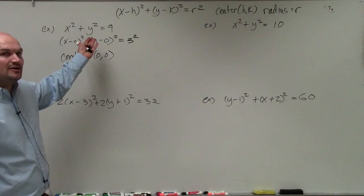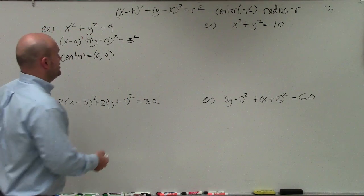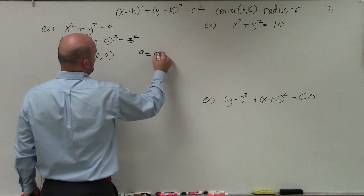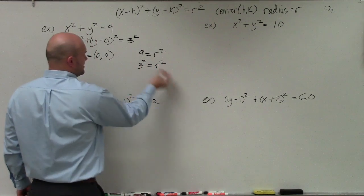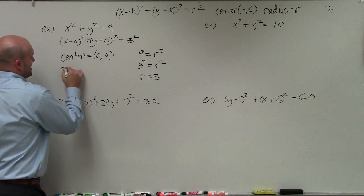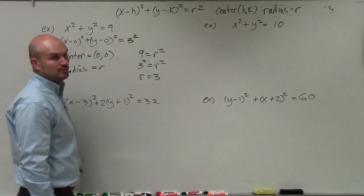I noticed that 9 was a square number, so I rewrote it as a number squared. If we have 9 equals r squared, well, 3 squared equals r squared. Therefore, r has to equal 3. So the radius is equal to 3.